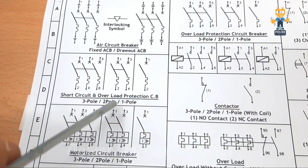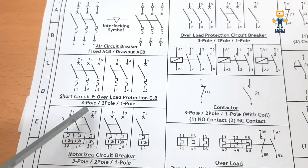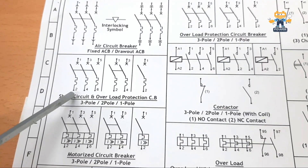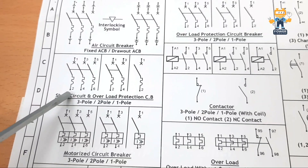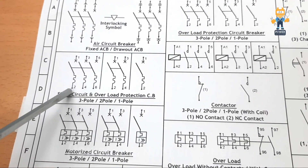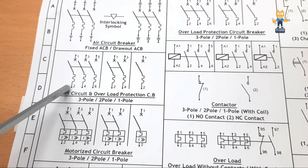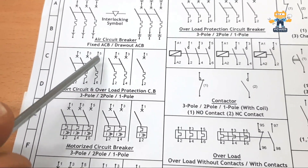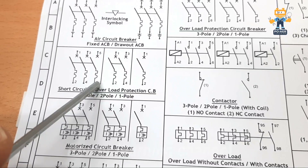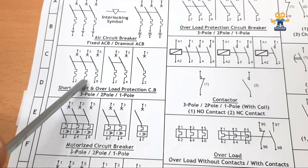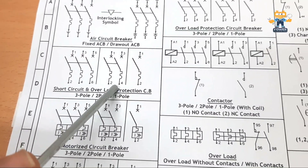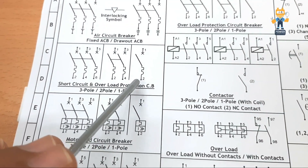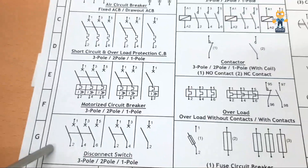For short circuit and overload protection circuit breakers — three pole, two pole, one pole — this is the normal MCCB type symbol. For the three-pole MCCB, the inputs are 1, 3, 5 and the outputs are 2, 4, 6. This is the three-pole, this is the two-pole, and this is the one-pole — single pole — where we have only one contact.